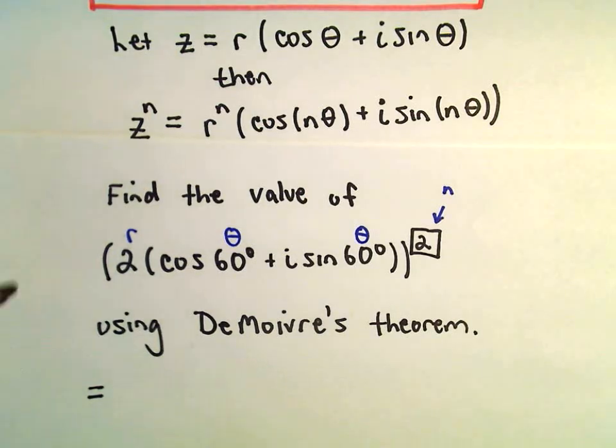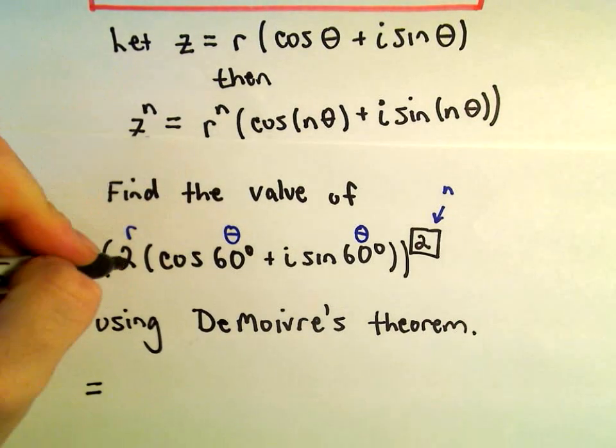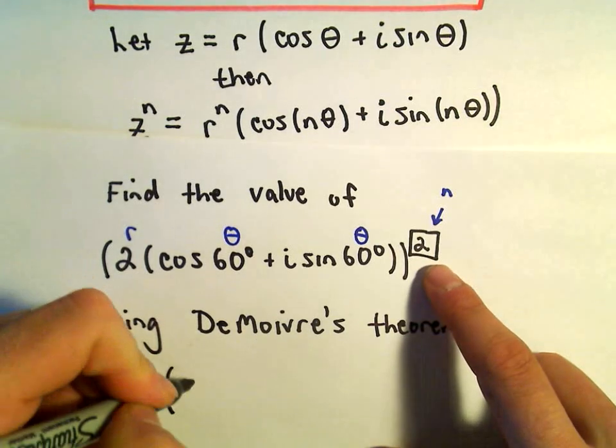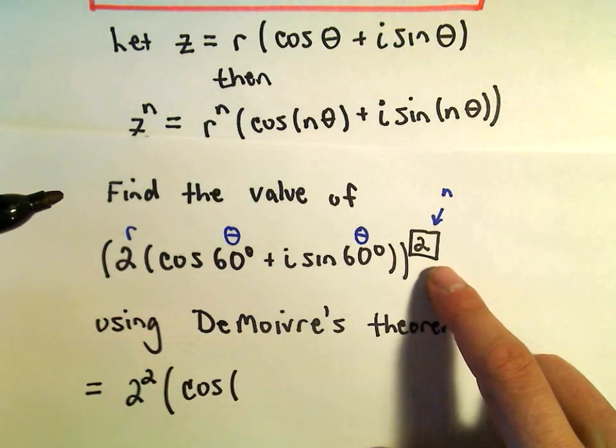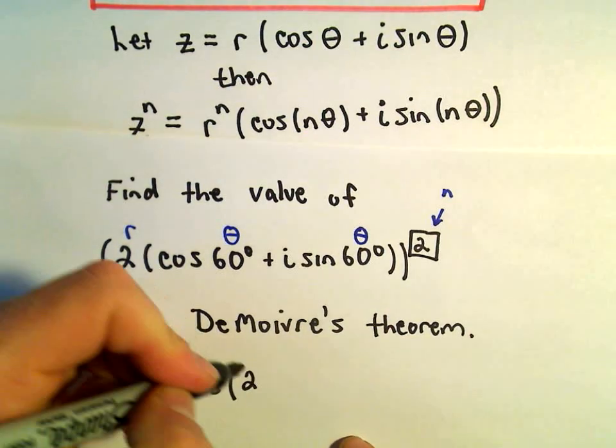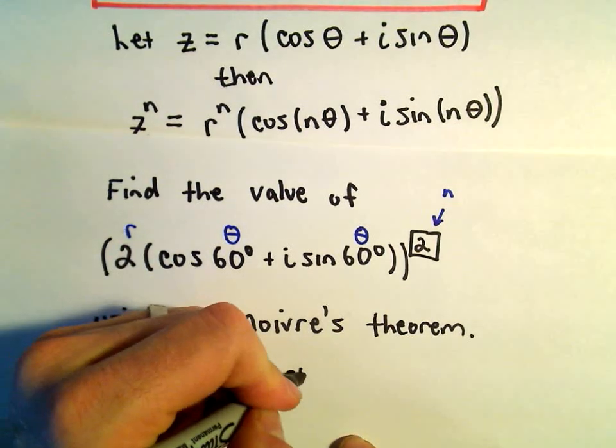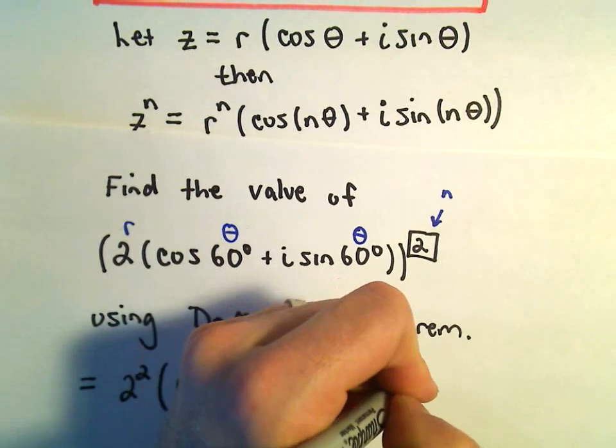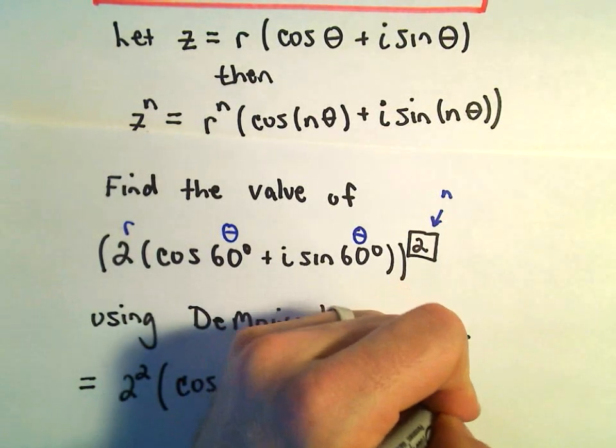So all we have to do is just plug everything into our formula. It says we would get, well, 2 to the second power, and then we would have cosine of 2 times theta, which is 60 degrees, plus i times sine of 2 times 60 degrees.